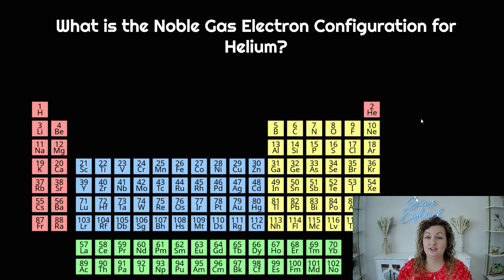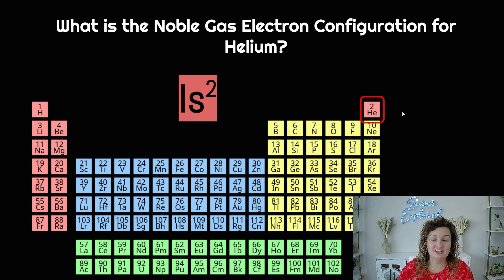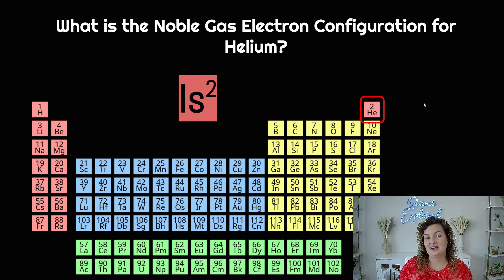What is the noble gas electron configuration for helium? Well, helium is right here. So is there a noble gas that comes before helium? No — helium is the first noble gas, there is none before it to use to make it any shorter. So the electron configuration is the same for the abridged version or the regular version for helium — it's just 1s2. You're in the first row, the S block, and you have two electrons. So 1s2 is for helium — that's kind of a trick question, and I wanted to throw that one in there to see if you guys would catch it.